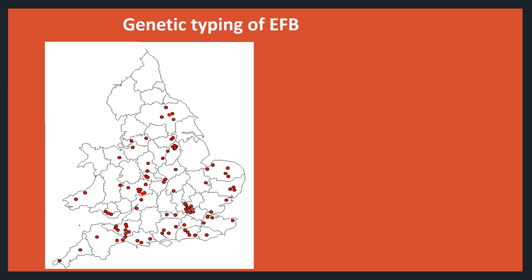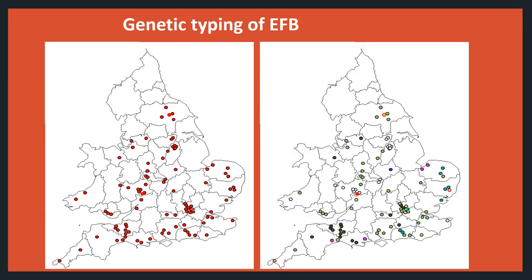Thanks to this genetic typing scheme, we now have a good idea of the strain types of Melissococcus plutonius that exist in the UK. If we look at the cases of EFB in England and Wales on this map, we can see the location for all the cases of EFB for a single year as red dots — each dot represents an apiary where EFB was found. This becomes more interesting when we look at the map on the right, where the same cases have been given different colours based on which strain type they are, revealing that some strain types have regional distributions while others are more ubiquitous throughout England and Wales.